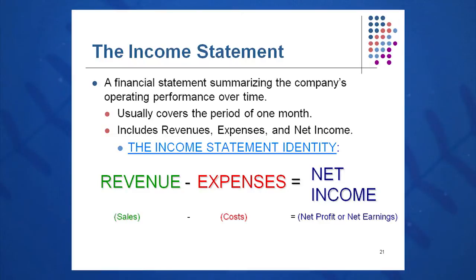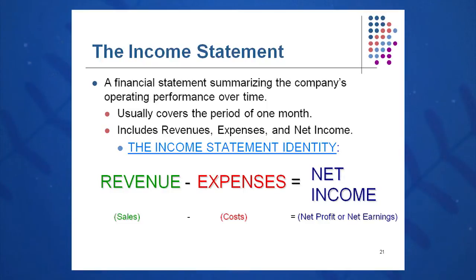Some financial documents use different terms for net income. Some call it simply profit, some call it earnings — you'll see that word in the Wall Street Journal regularly. I'd rather call it net profit or net earnings to indicate the bottom line. Some companies even call it NPAT — net profit after tax — which is the same thing as net income.